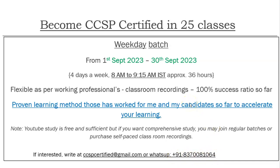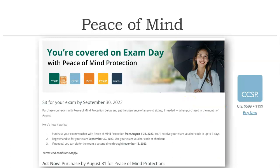Before we come to the topic of the day, I quickly cover the Peace of Mind promotional activity by ISC². ISC² conducts this activity almost every month — it gives a buy-one-get-one offer. If you are not able to qualify on the first attempt, you get a free second attempt. For example, if you purchase a voucher by 31st August, you can sit the exam by 30th September.